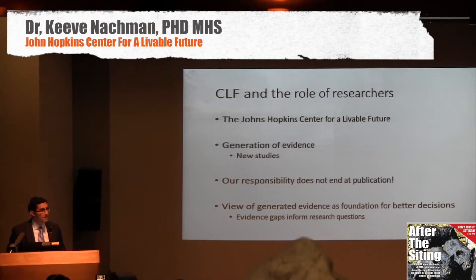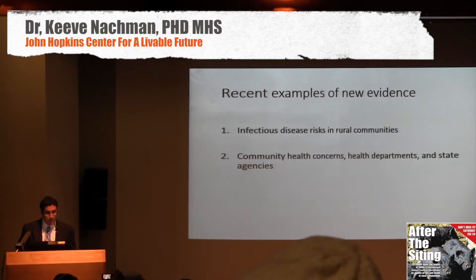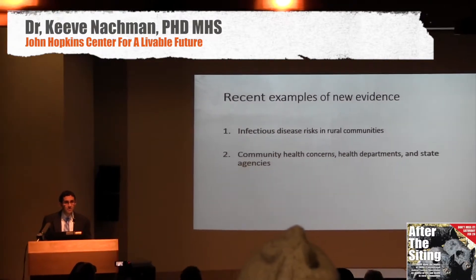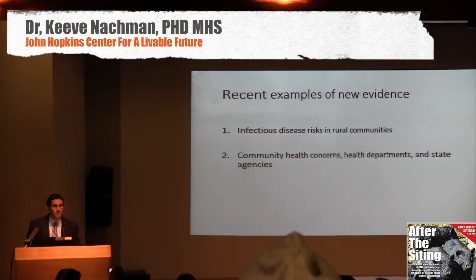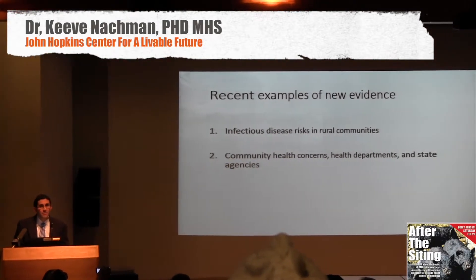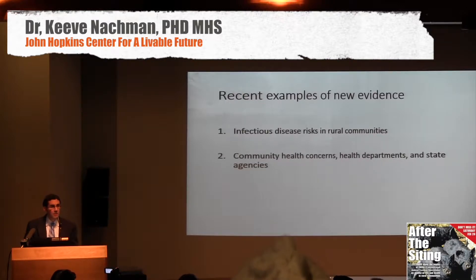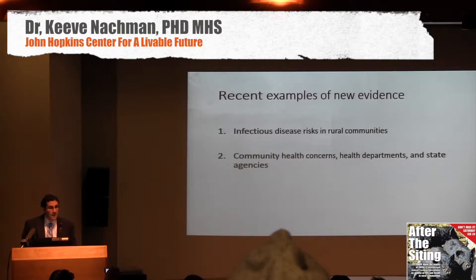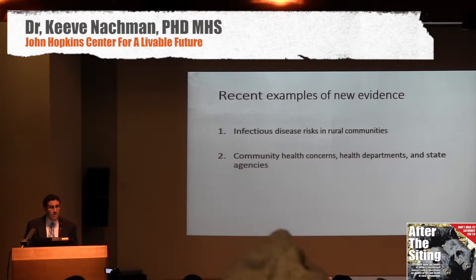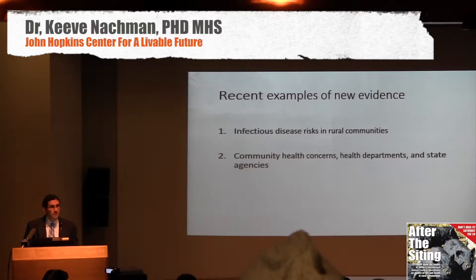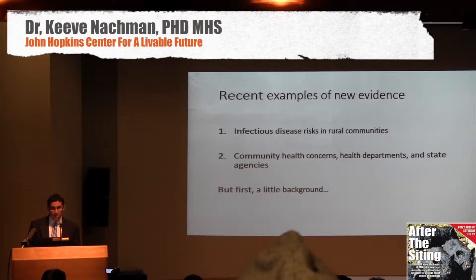You will start to understand the types of work that we're trying to do. I have two examples of recent studies that we've published. The first answers the question of what do infectious disease risks look like in communities near large-scale swine operations and near cropland where swine waste is routinely applied. The second asks what state and local agencies are available to protect citizens and to what extent are they doing so. But before that, I want to give some background on industrial food animal production.